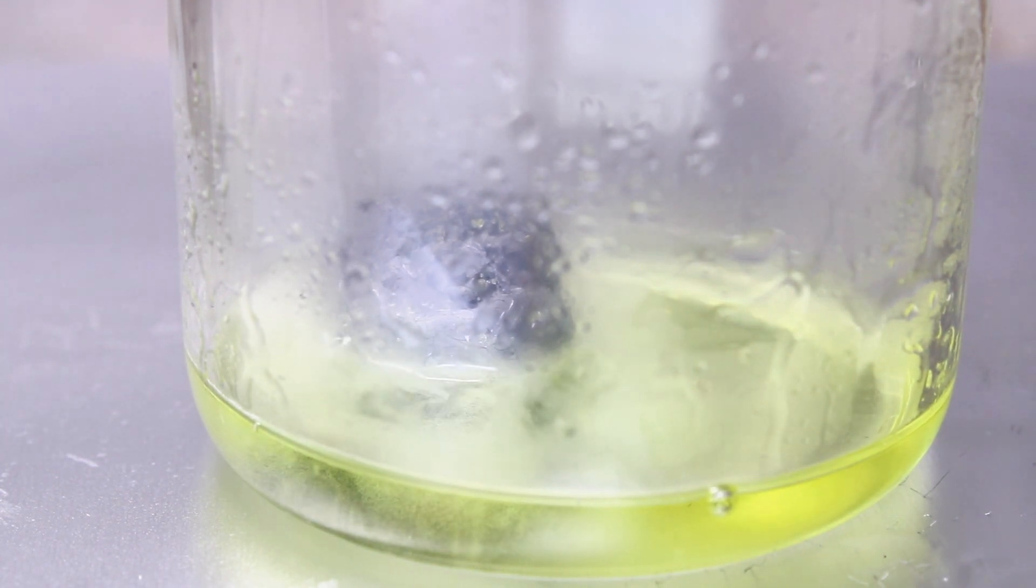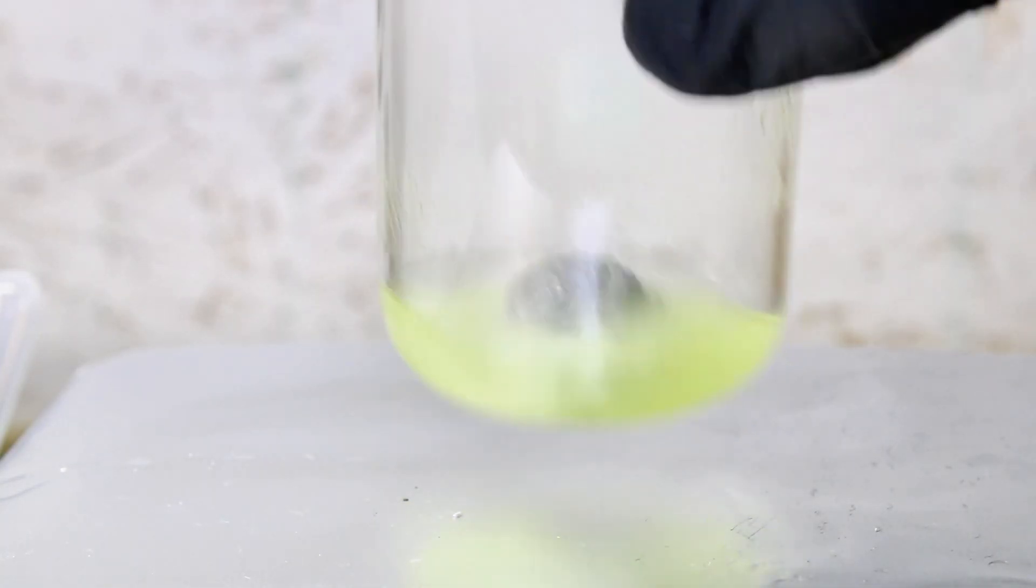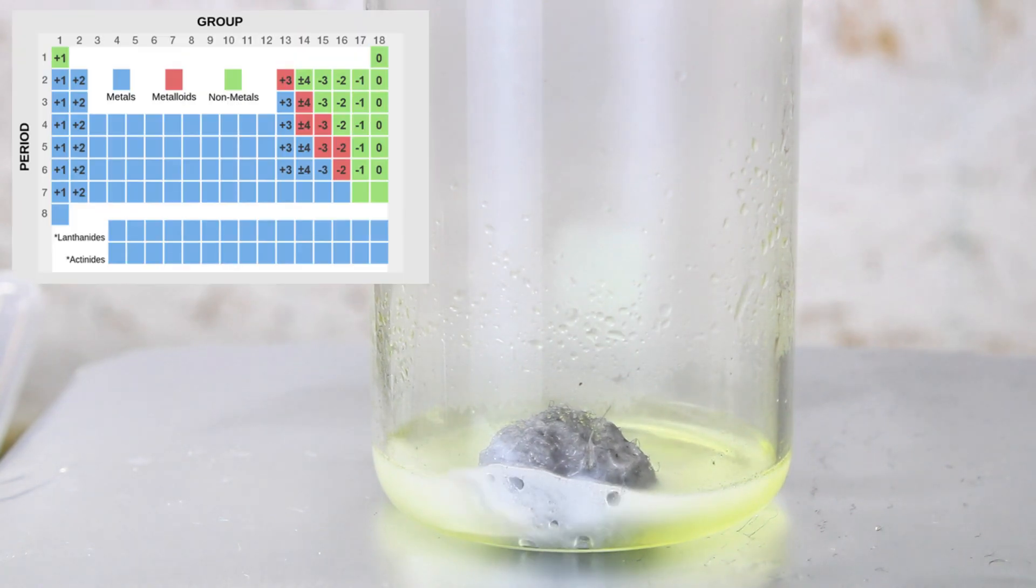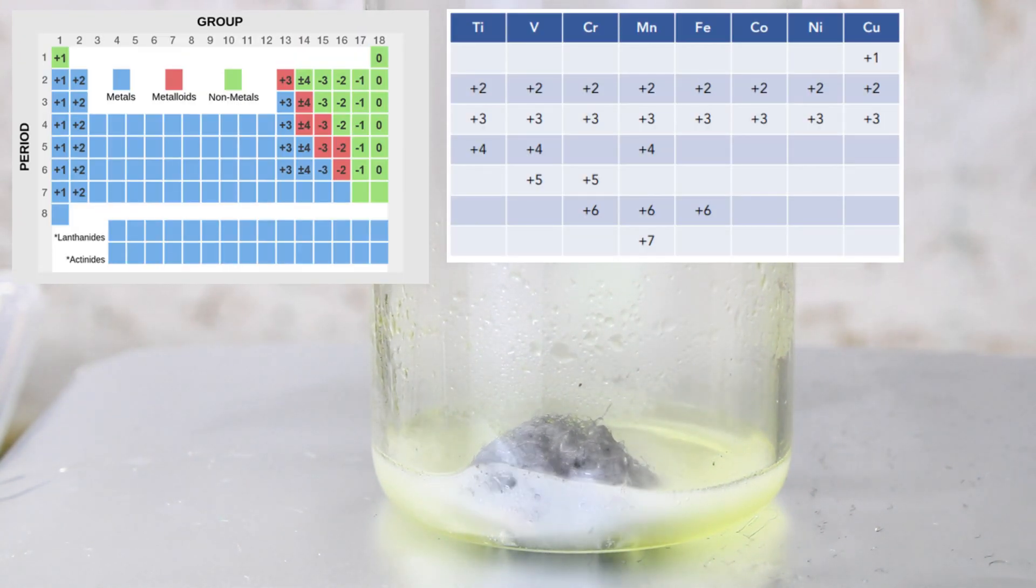Electrons have a negative charge, so if something has a +1 oxidation state, it means that it's lost one electron. Group 1 and 2 metals can only have one oxidation state, but transition metals like iron can have several, which is what this video is all about.